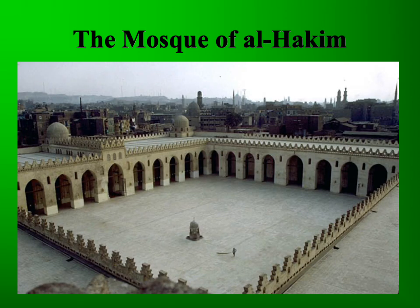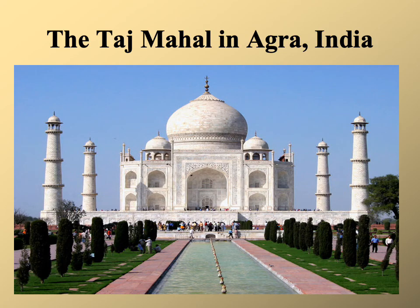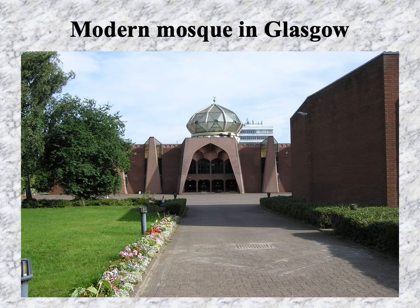Here we see the Mosque of Al-Hakim in Cairo. And then this is not a mosque, even if it resembles one — the Taj Mahal in Agra, India, which is actually a tomb, built for the beloved wife of a sultan. Finally, we finish with a very modern mosque of a smallish scale, located in Glasgow in Scotland. When you think about it, you think yeah, that could be a mosque, but it's not obviously evident at first glance.